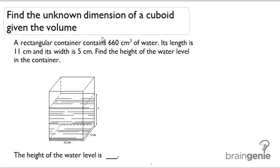We're going to work backwards again. We're going to find the unknown dimension of a cuboid given the volume. So we're back to a cuboid instead of a cube. Let's recall the formula: V equals length times width times height. Let's use this formula to solve this problem.